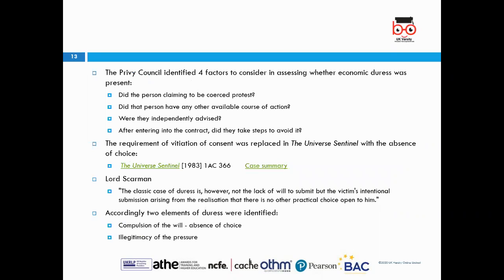As mentioned, the four factors identified in the Pao On case are relevant. The requirement of vitiation of consent was replaced in Universe Tankships with the absence of choice. In that case, Lord Scarman identified the classic case of duress: it is not the lack of will to submit, but the victim's intentional submission arising from the realisation that there is no other practical choice open to them. Accordingly, two elements of duress were identified: first, compulsion of the will — absence of choice — and second, illegitimacy of the pressure.